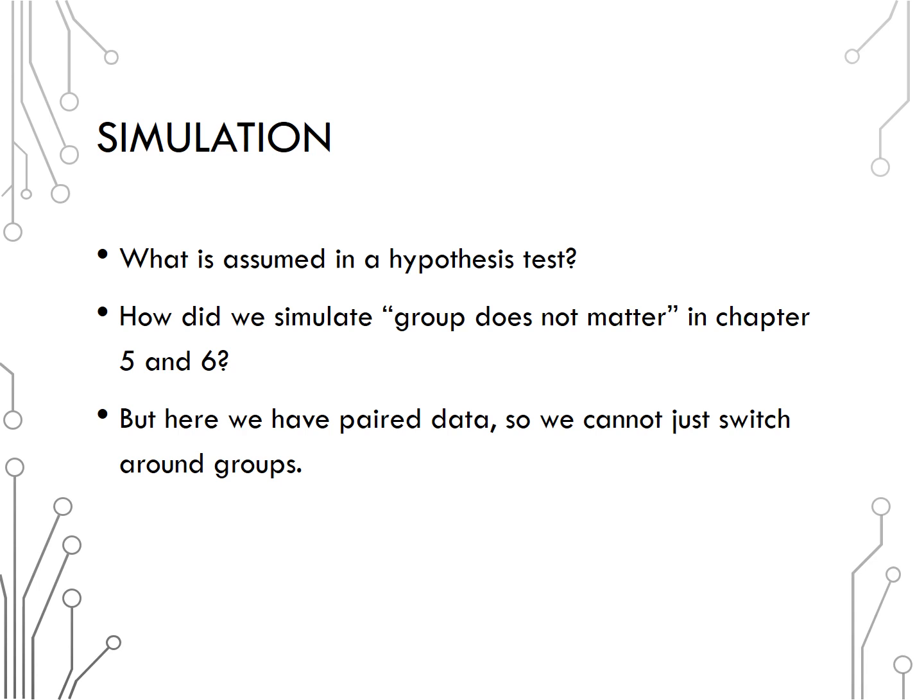So how do we do a simulation test? We start by assuming the same thing that we assume in every hypothesis test, that the null hypothesis is true, which is that group doesn't matter, or that the differences for each pair are zero, on average. How did we simulate group doesn't matter in Chapter 5 and 6? Well, we wrote the response variable on cards, mixed them up, and dealt them into the same size groups as before, to create one sample, which assumes the null.